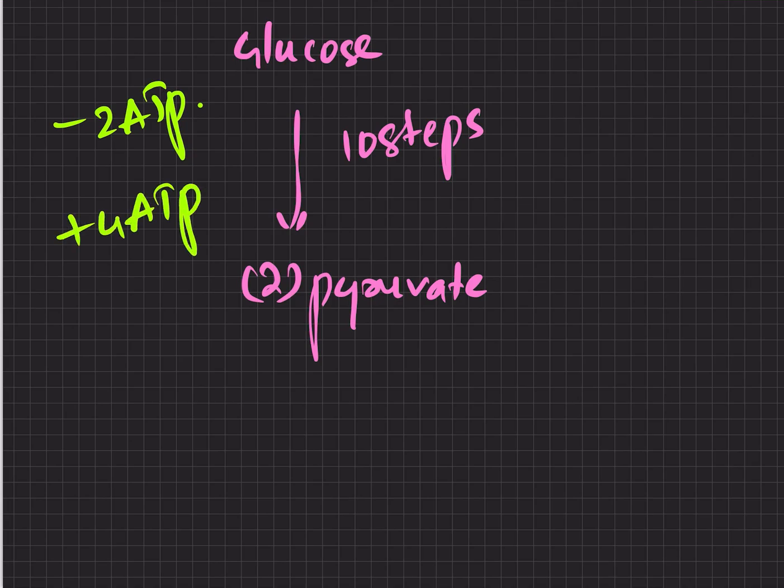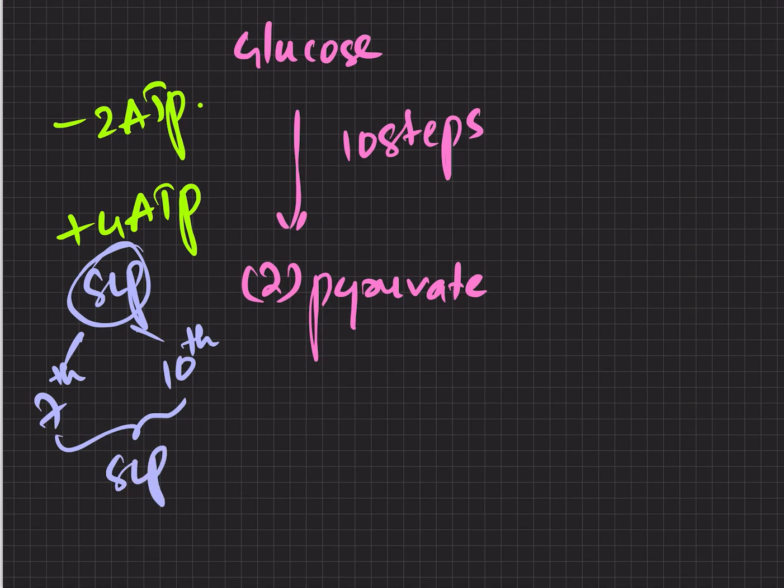Four ATP has been produced by substrate level phosphorylation in the seventh step, phosphoglycerokinase, and the tenth step, pyruvate kinase. In both SLPs we have produced 2 ATP once and 2 ATP another time, so finally 4 ATP.